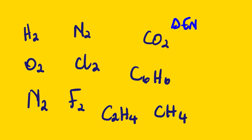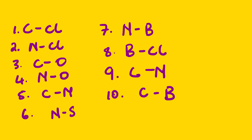For the following molecules, simply show the type of bonding that exists between the elements — write whether it is non-polar covalent, polar covalent, or ionic. That's it for this lesson video. Thank you very much.